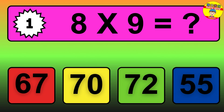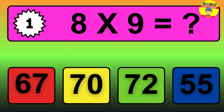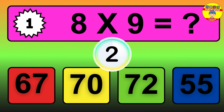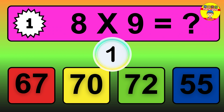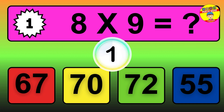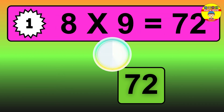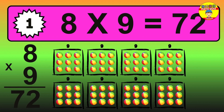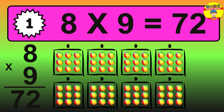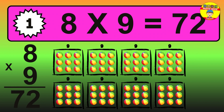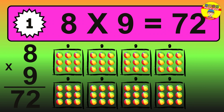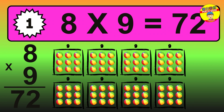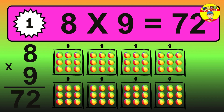Question 1. 8 times 9 equals what? The answer is 8 times 9 is 72. To calculate, we have 8 groups with 9 balls each one. So, how many balls do we have? 72 balls.